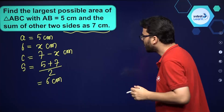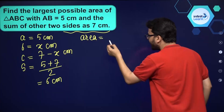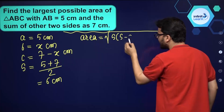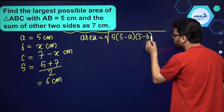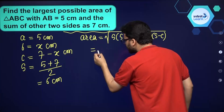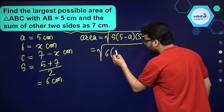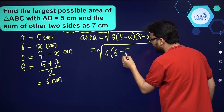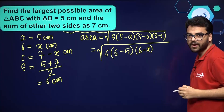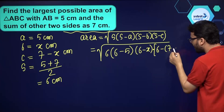Now the area of this triangle using Heron's formula is: Area = √(S · (S−a) · (S−b) · (S−c)). Substituting: S is 6, S minus a is 6 minus 5, S minus b is 6 minus x, and S minus c is 6 minus (7 minus x).